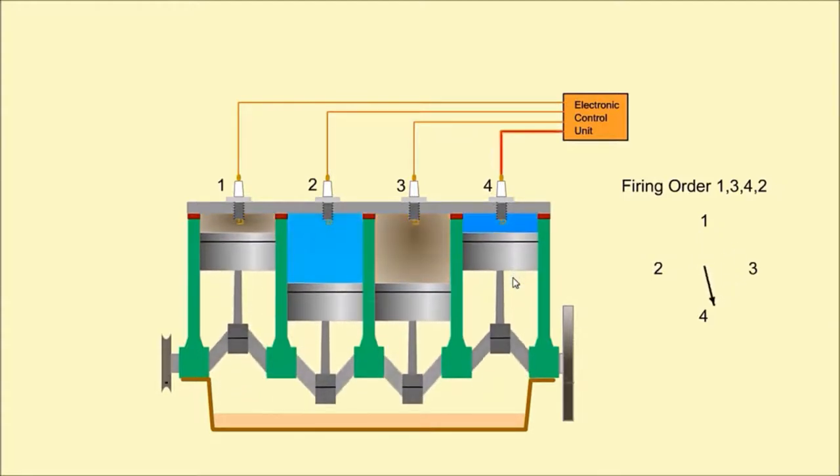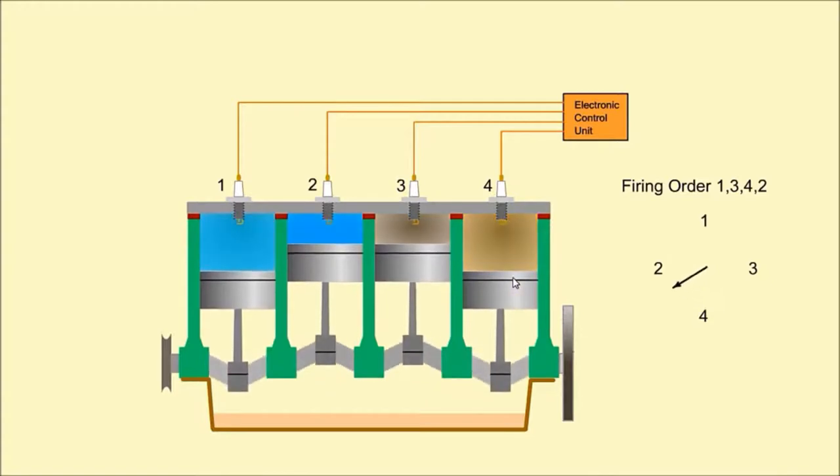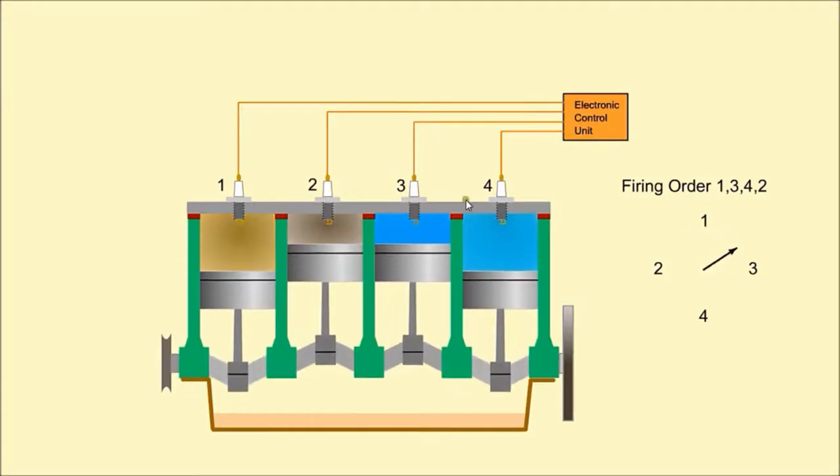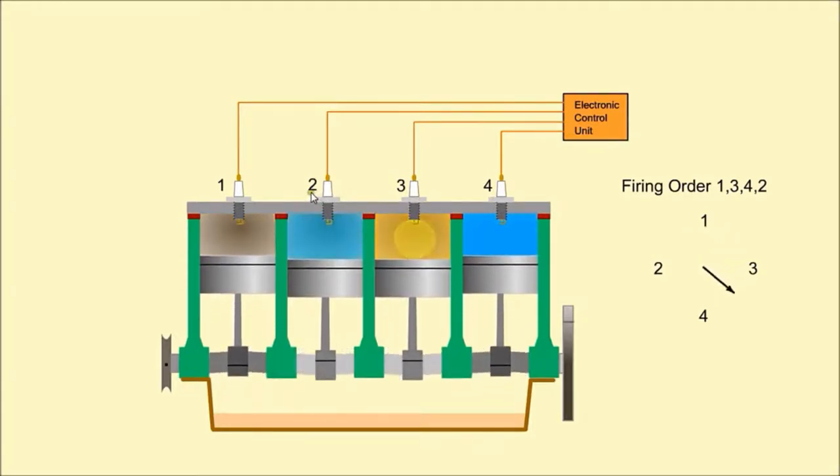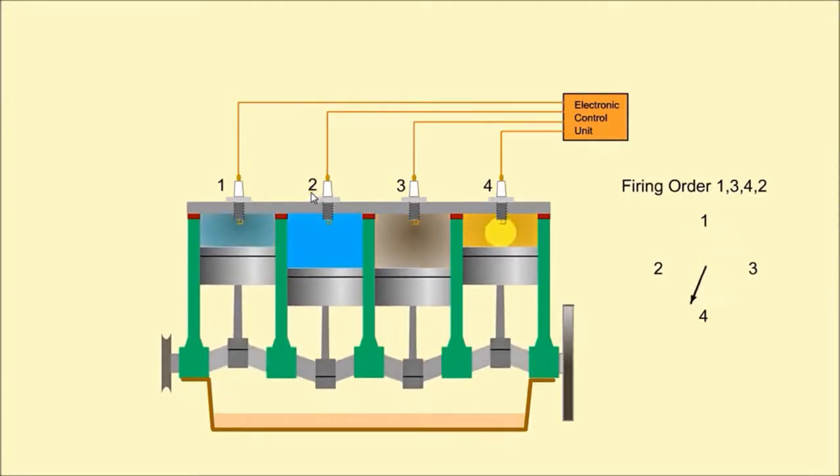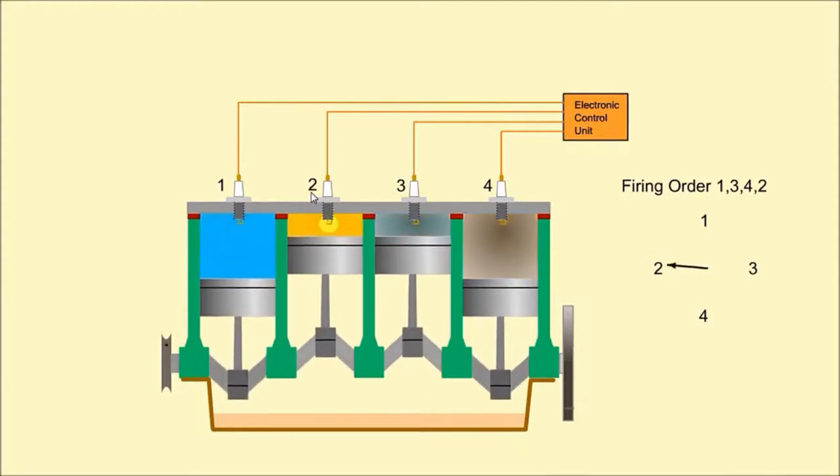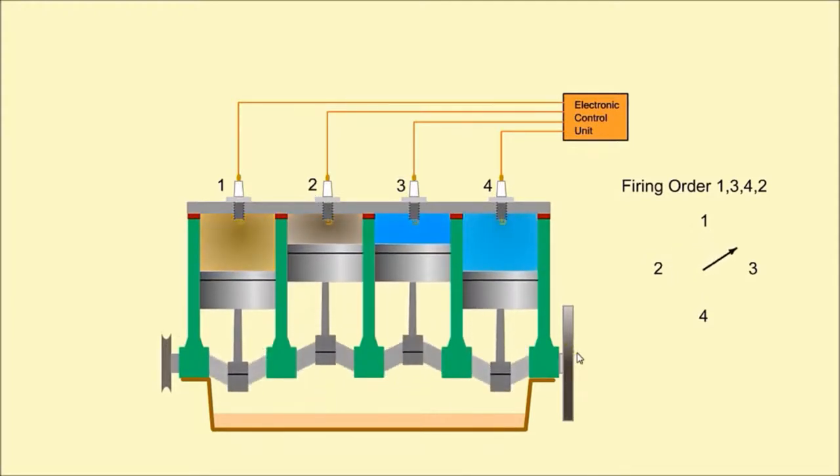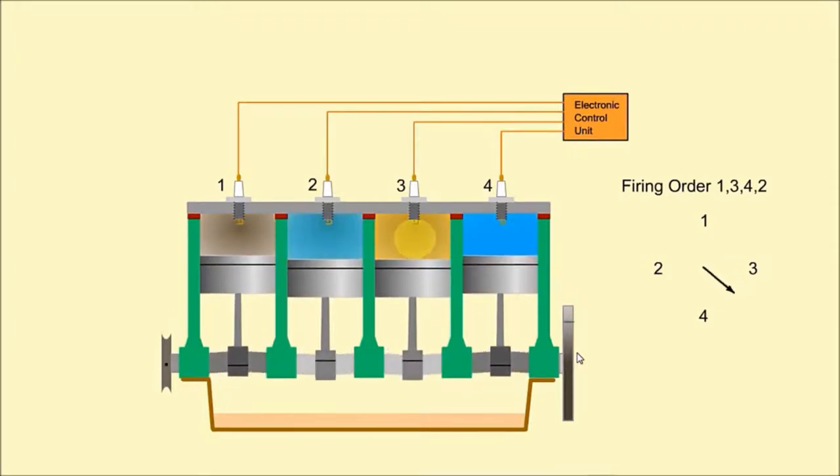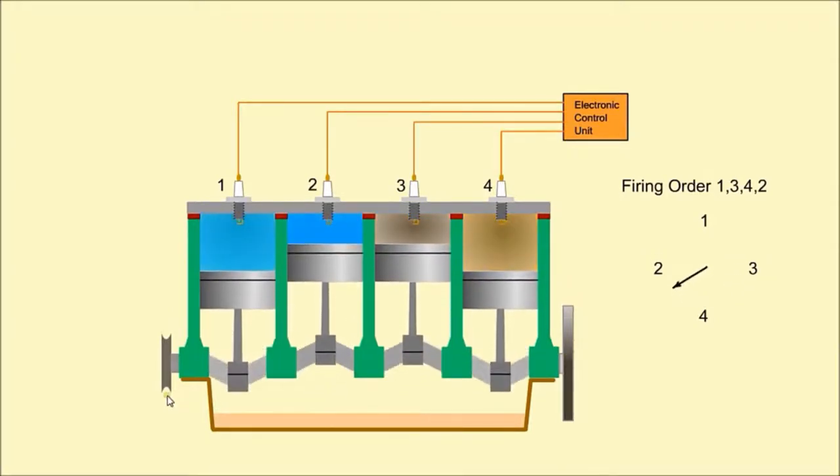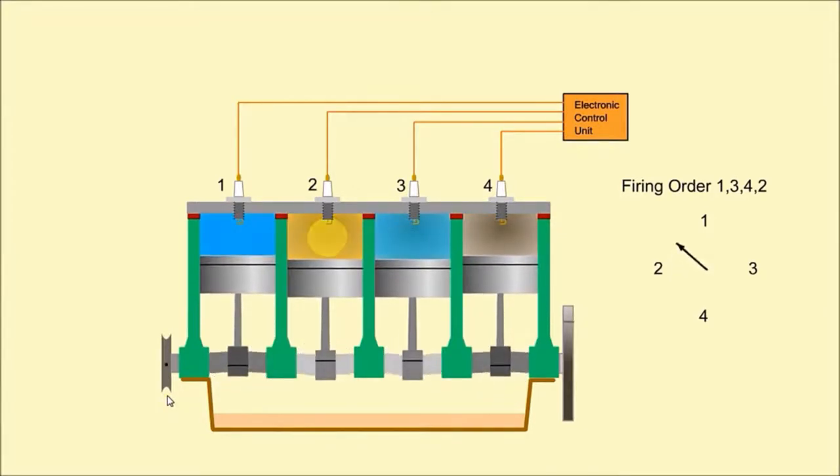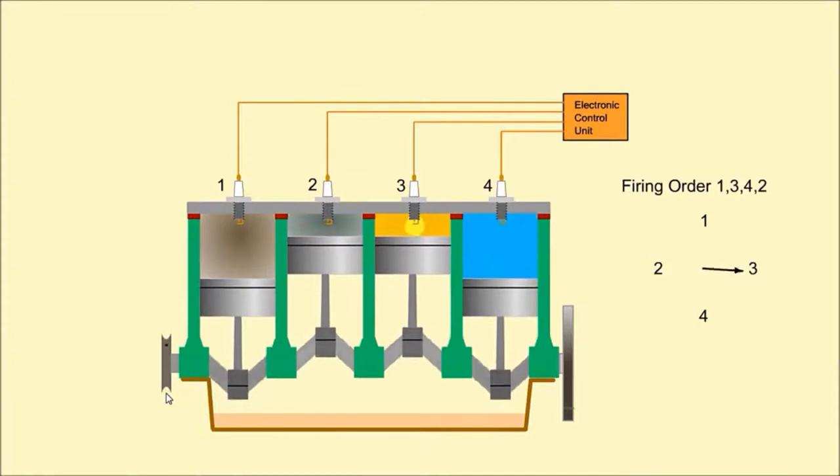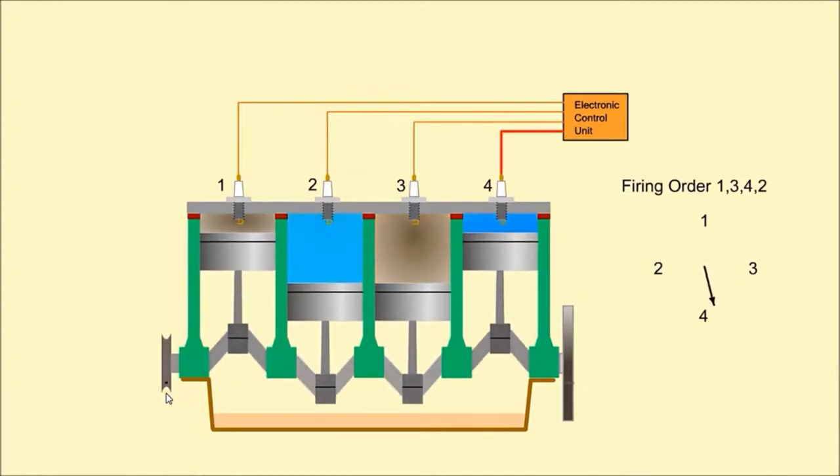All cylinders will have staggered combustion strokes. For this engine, the firing order is one, three, four, two. This firing sequence is used to reduce the engine vibration. A flywheel is attached to the end of the crankshaft to reduce pulsations and vibrations. A pulley is attached to the other end of the crankshaft which can be used to drive ancillary equipment such as the alternator, water pump, or timing belt.